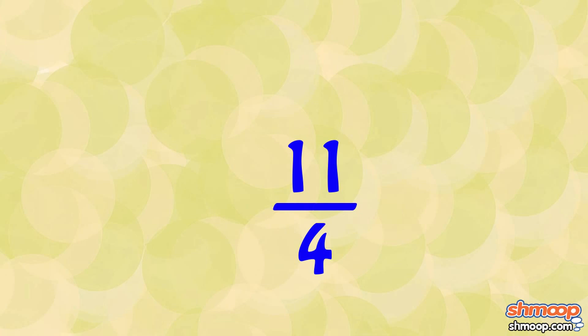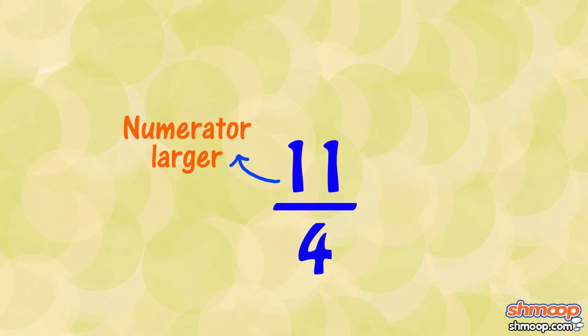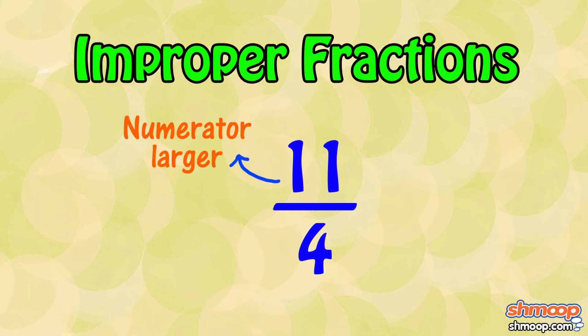When we get a fraction where the numerator is larger than the denominator, we call them improper fractions.